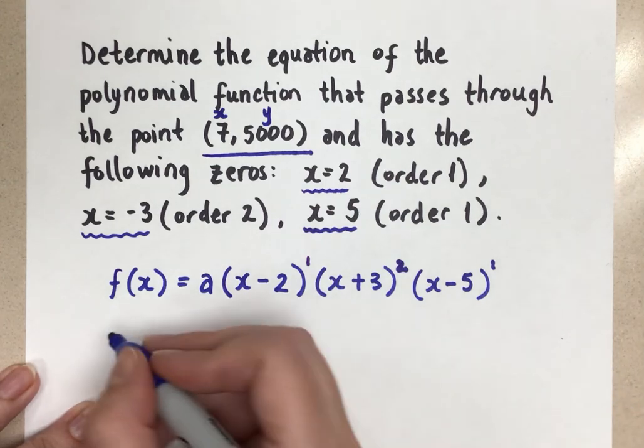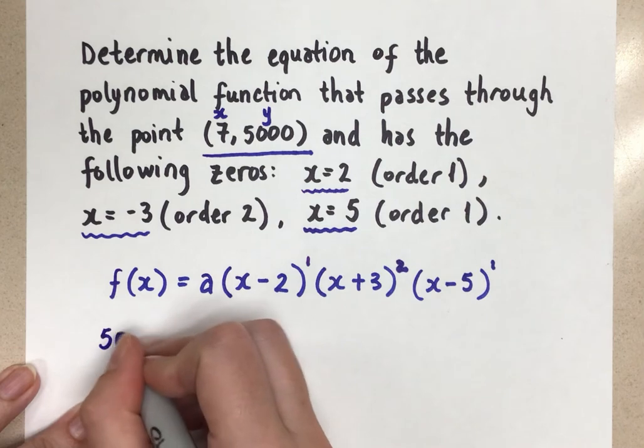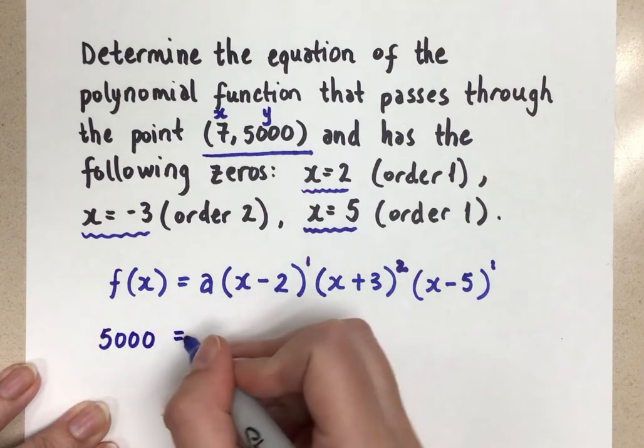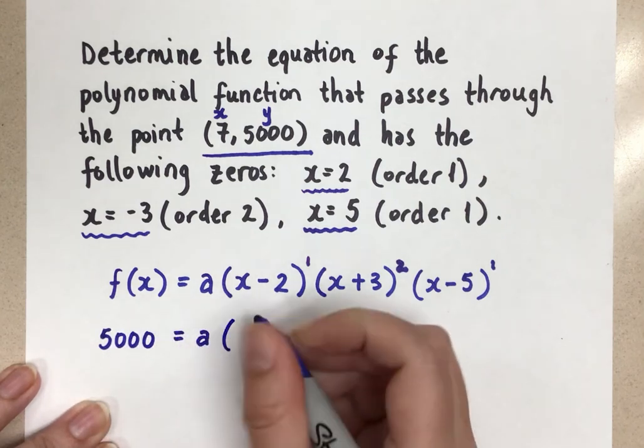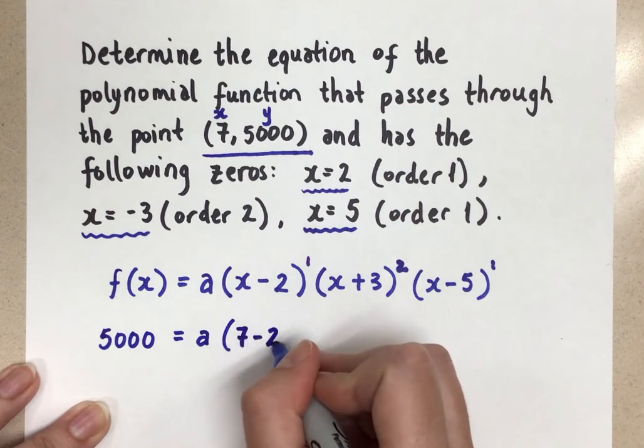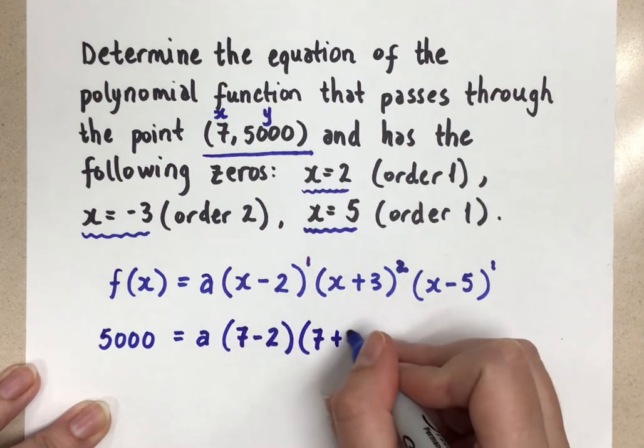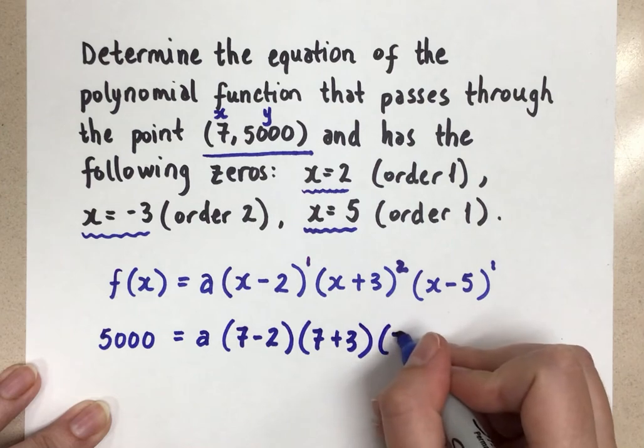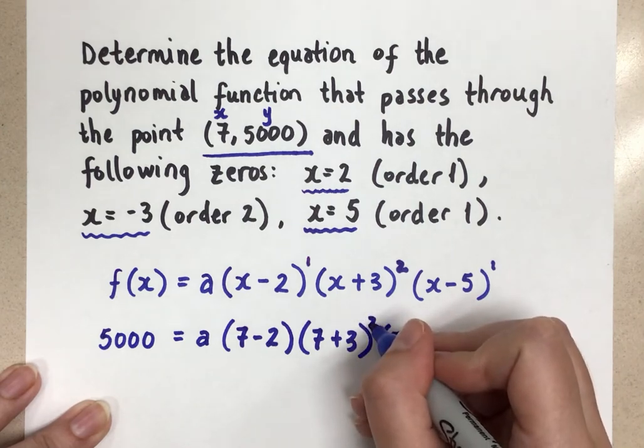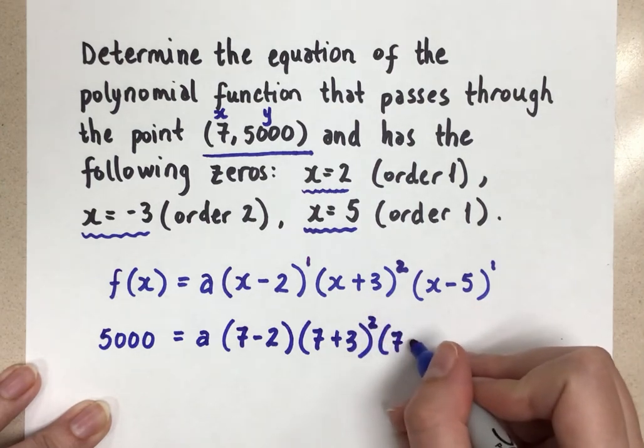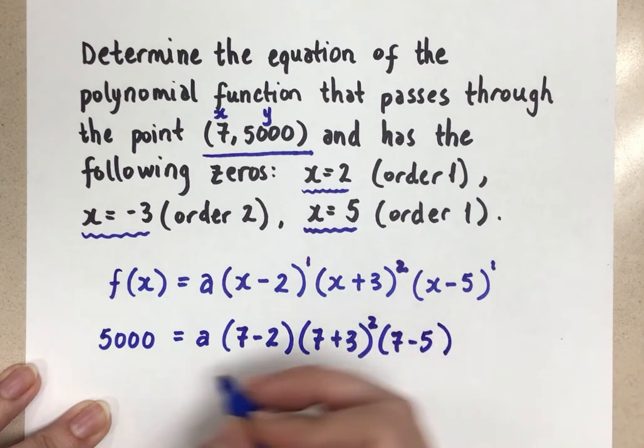And then we're going to evaluate a little bit. So let's plug in y is 5,000. We don't know what a is. x is 7. x is 7. x is 7. Oh, I forgot my squared there. Don't forget that. That's important.